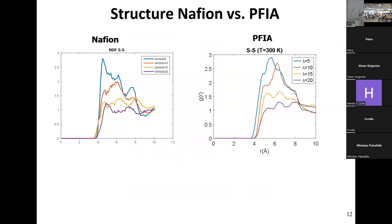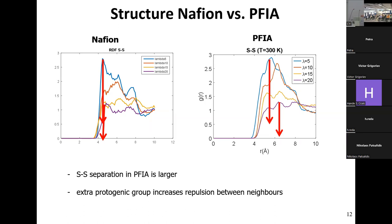Quantum mechanical calculations show that if the separation between sulfonate groups is roughly five angstroms, conductivity is good. If they are very close, negatively charged groups trap hydronium ions and prevent conductivity. For Nafion, this separation is roughly five angstroms and does not change significantly with hydration. For PFIA, the distance increases slightly with lambda because ionization of the additional sulfonylimide group creates more repulsion between charge groups.